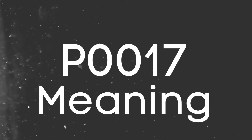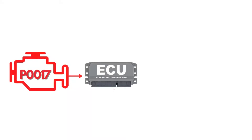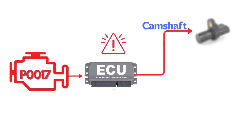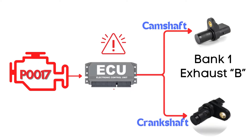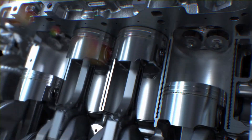The P0017 code indicates that the ECM has detected a correlation error between the camshaft position sensor for bank 1, specifically the exhaust camshaft, and the crankshaft position sensor. This means there's a misalignment between the camshaft and crankshaft positions. But what does that mean for your engine?